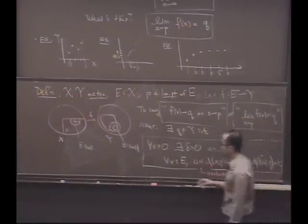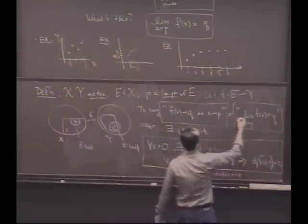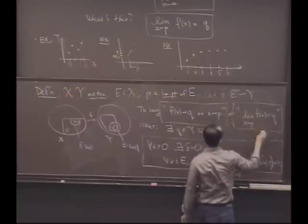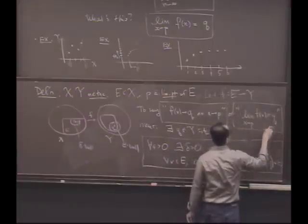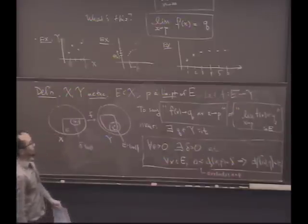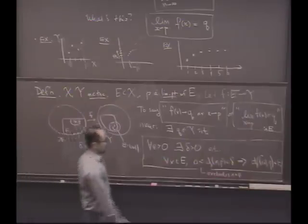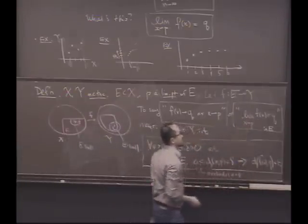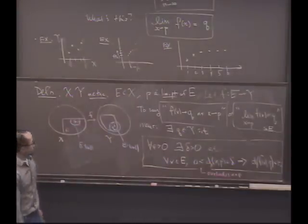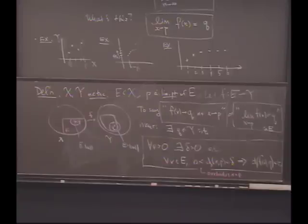Oh yeah. So I mean, maybe we should clarify here that when we say the limit of f of x equals q, we mean implicitly in this space E. So your worry is maybe if you think about this function as being defined on larger space, it doesn't have a limit. Yeah. And so this phrase implicitly means on the domain of the function f. Okay. Excellent. Excellent questions.